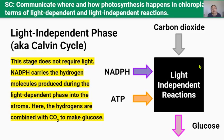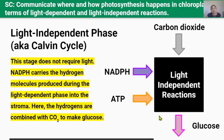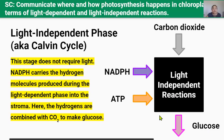The second phase of photosynthesis is called the light-independent phase because it doesn't need light — it's independent of light. The light-independent phase occurs in the stroma of the chloroplast. Here in the stroma, carbon dioxide from the air and hydrogen carried by NADPH from the previous reaction are joined together through a series of enzyme-controlled reactions to produce the final product, glucose. This glucose is used in cell respiration to create energy in the form of ATP.